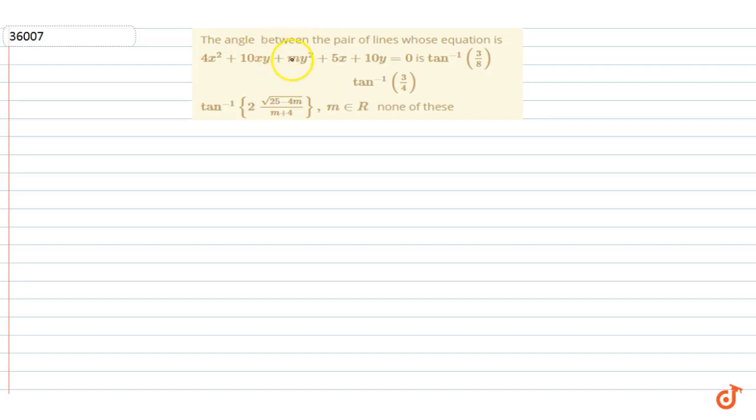In this question we are asked the angle between the pair of lines whose equation is 4x² + 10xy + my² + 5x + 10y = 0. We are given this equation and we have to find the two lines and tell the angle between them.